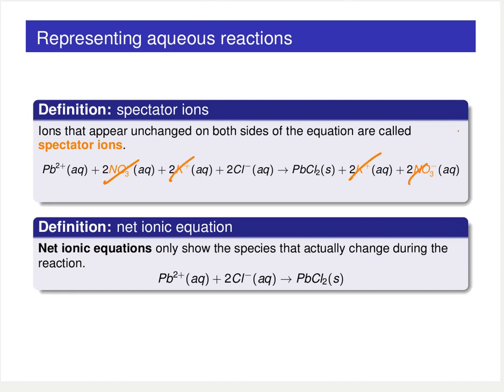If we kick out those spectator ions — cross them out because they appear on both the reactant and product side — and focus in on just the actual chemistry occurring, we end up with the so-called net ionic equation. The net ionic equation only shows the species that are actually changing and undergoing chemistry during the course of the reaction.